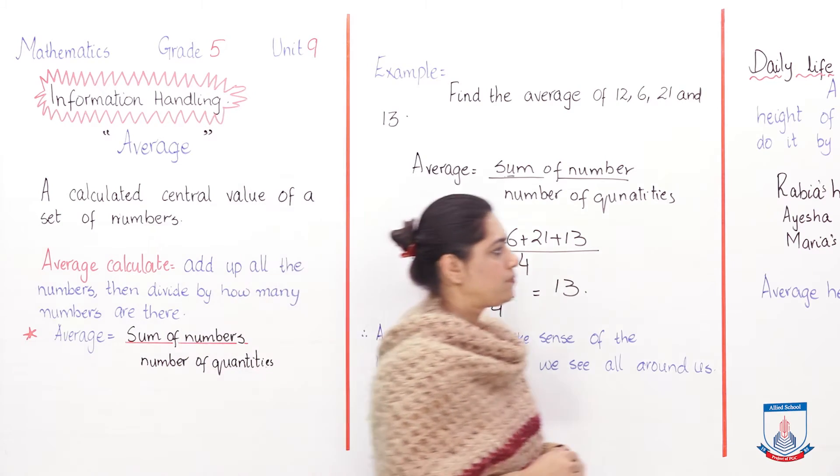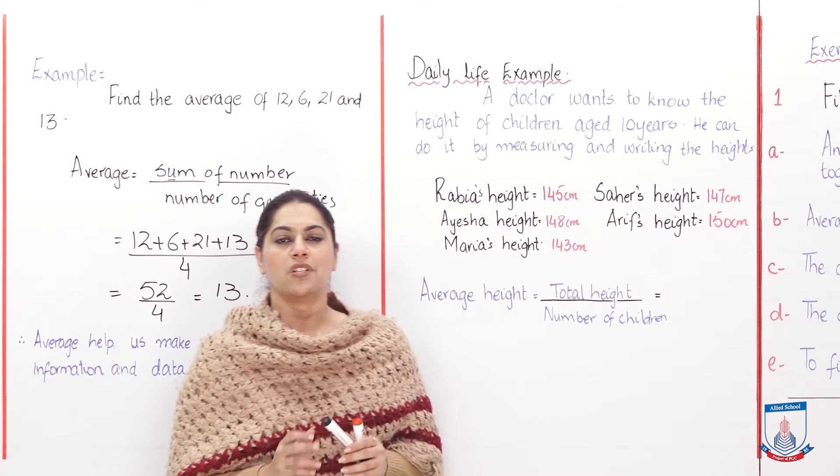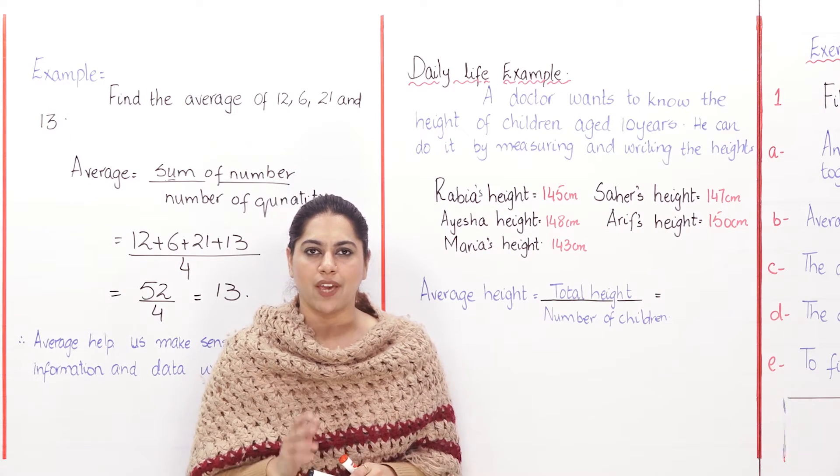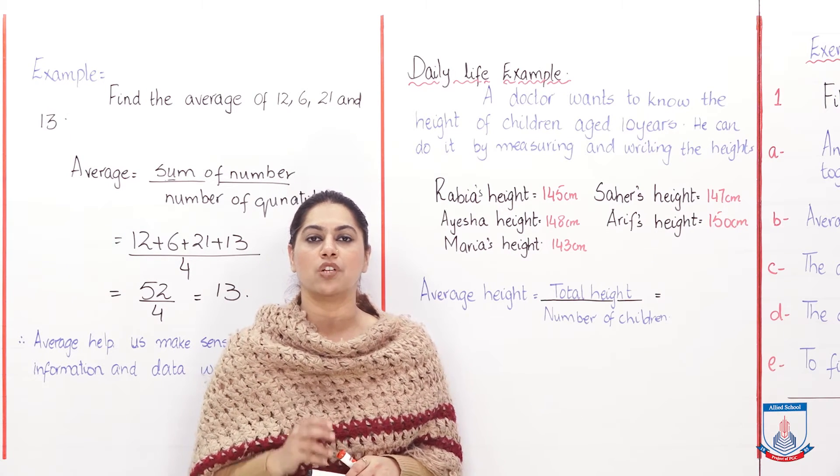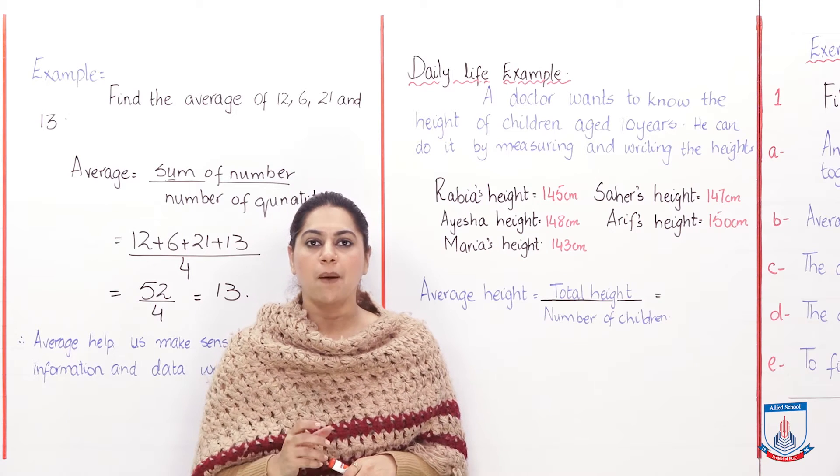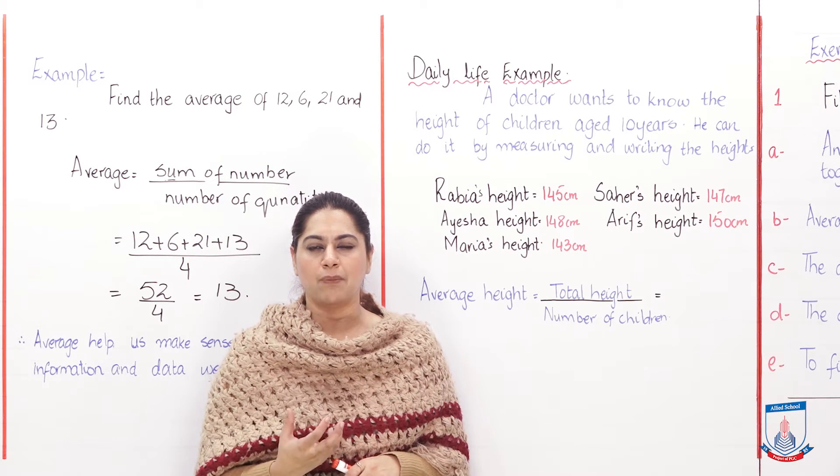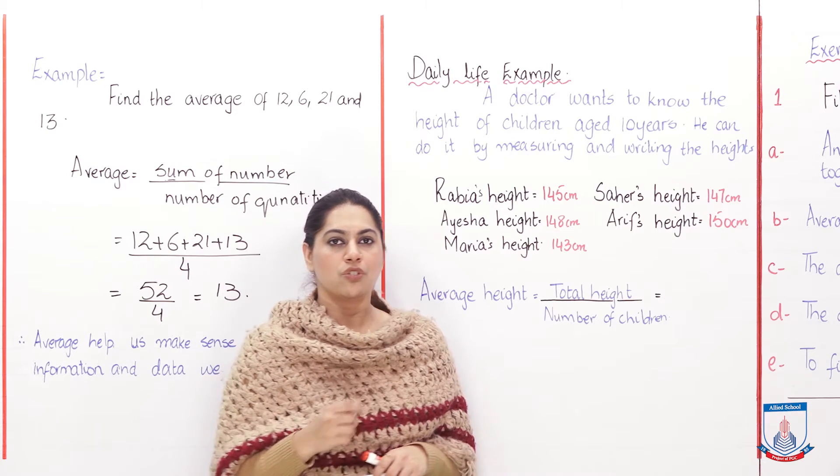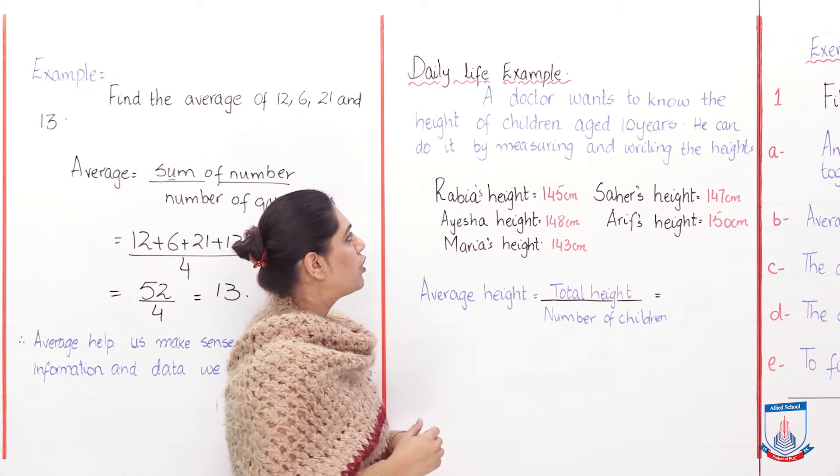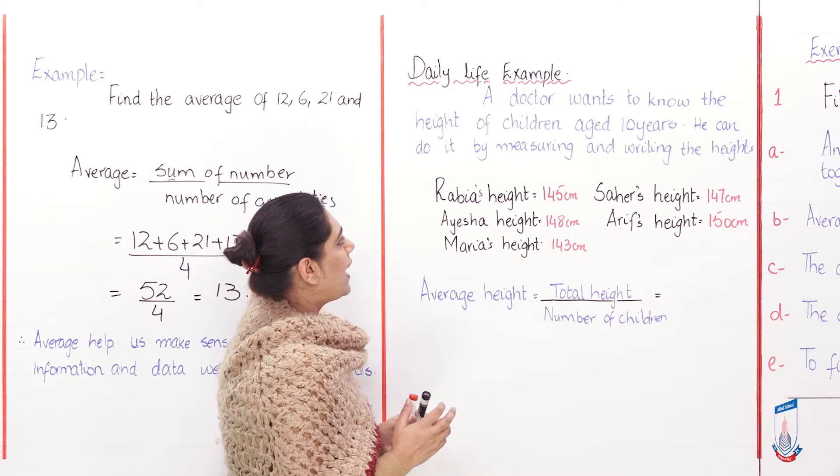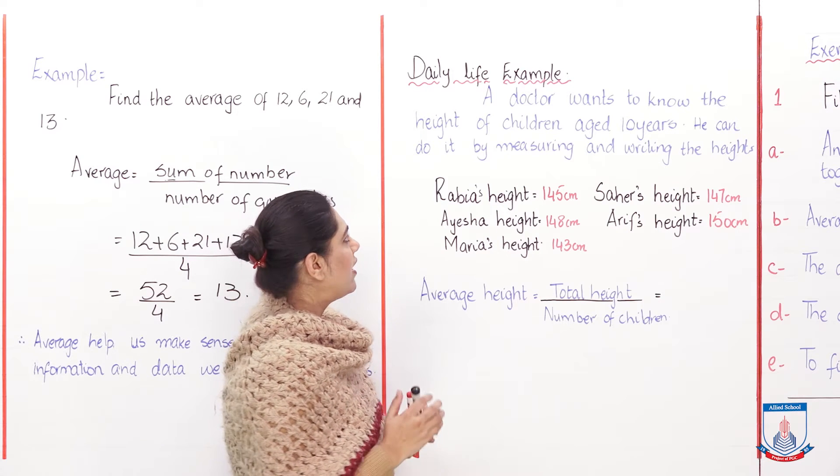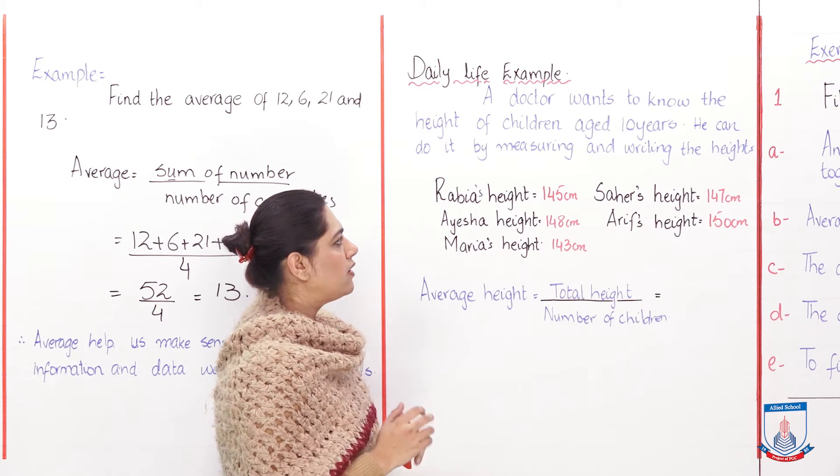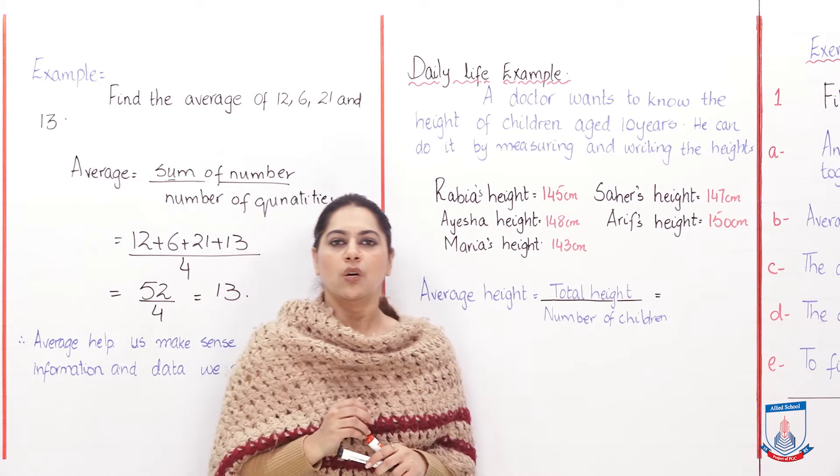Okay students, I hope that you got the concept of average and how to find out the average with the help of the formula. Now I will choose a daily life example and then we are going to include the average into it. The example is: a doctor wants to know the height of children aged 10 years. He can do it by measuring and writing the height.